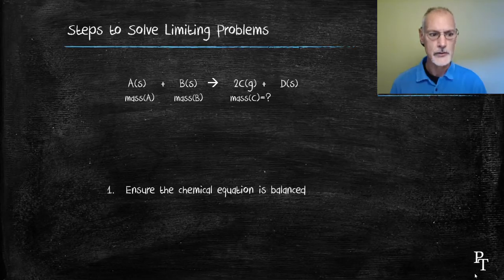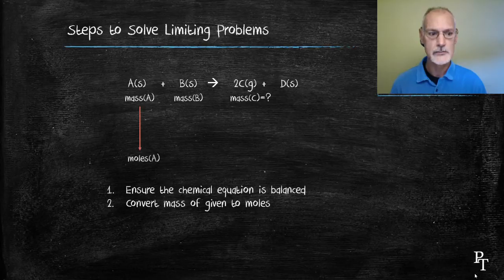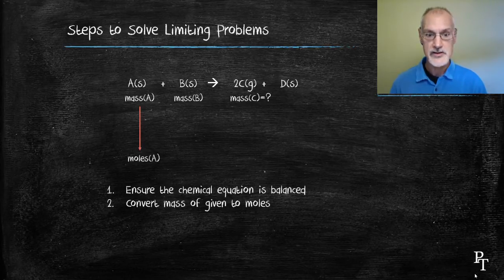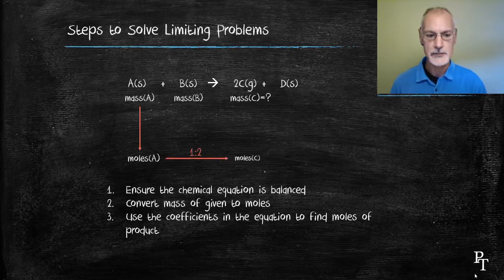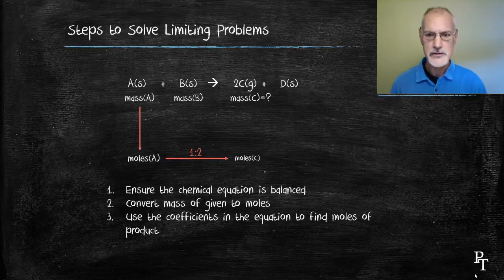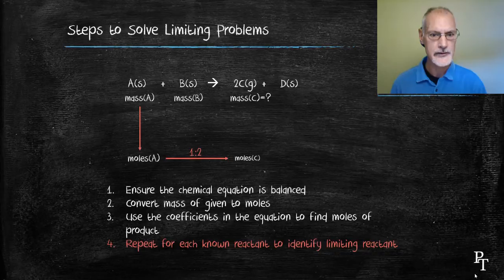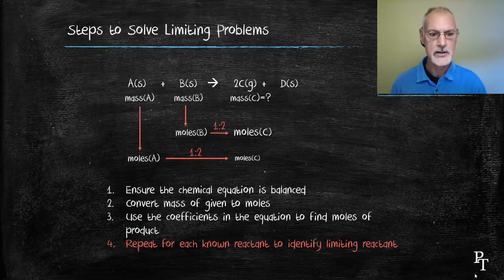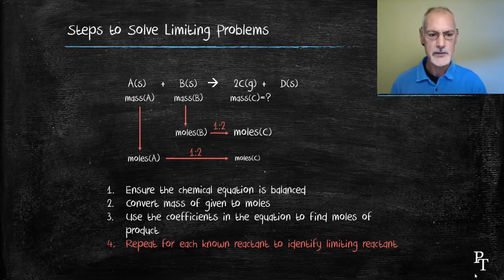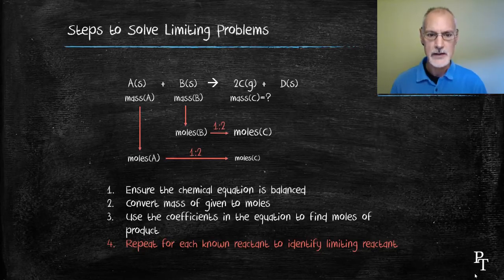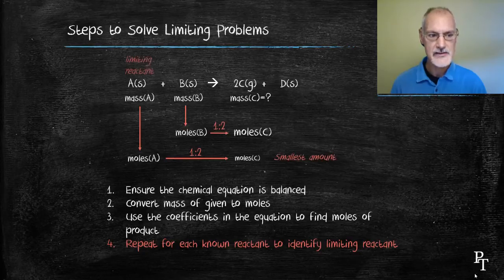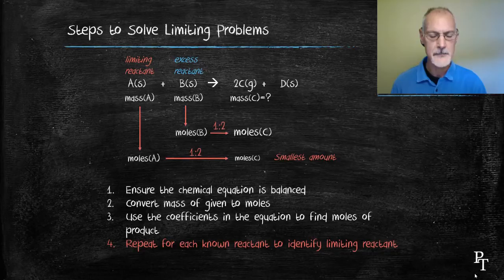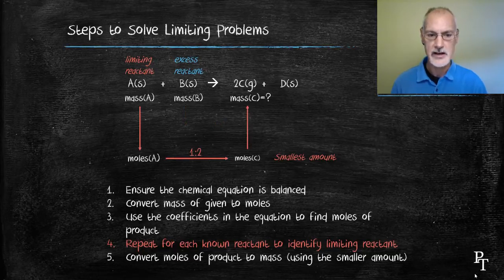I'm going to convert the masses to moles. So starting with substance A, I convert that to moles of A using the molar mass of A. Using the stoichiometric coefficients in the equation, I determine the ratio and the moles of C that I would produce. Now here's where the new step occurs. I have to repeat this for each of the substances of which I know their mass. So I'm going to take substance B and do exactly the same. Convert it to moles of B using the molar mass and then using the ratio, determine the moles of C that I would produce. So at this point, I would have moles of C. The smallest one is the amount that I actually make. That's my limiting chemical and that's the one I need to focus on because that's going to determine how much product I make. So I can then determine the amount of C that I would make by ignoring the information about my excess reactant and just focusing on my limiting reagent.